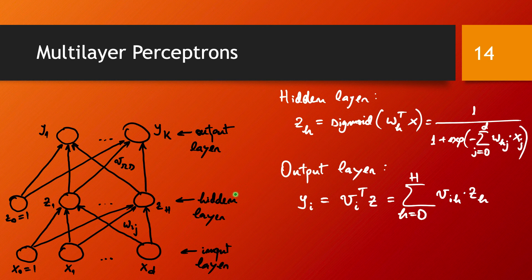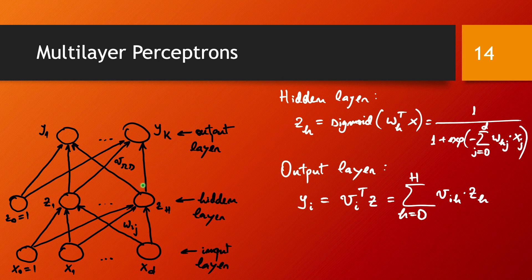The non-linear activation in the hidden layer is crucial. Without it, all calculations across the two layers would simply be a linear calculation following another linear calculation, which altogether would be just one bigger linear calculation — equivalent to a single-layer perceptron. So the whole idea of composing and adding layers would collapse. The non-linear activation is essential for gaining expressive power with multi-layer perceptrons.